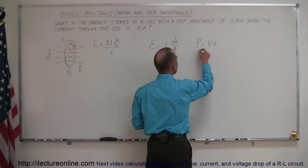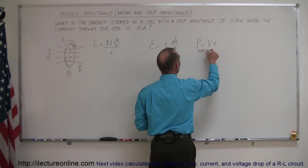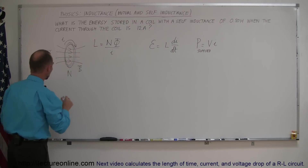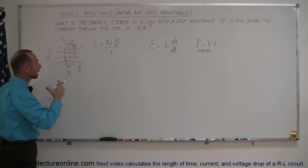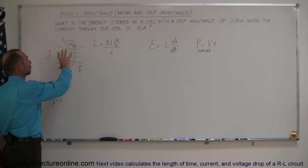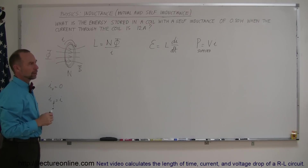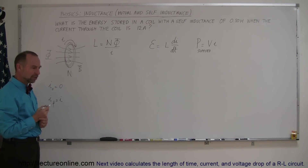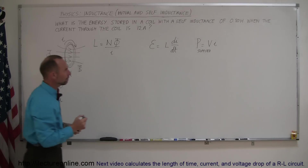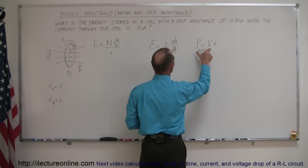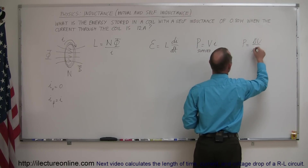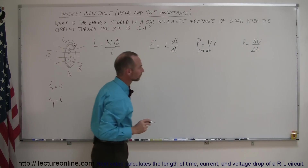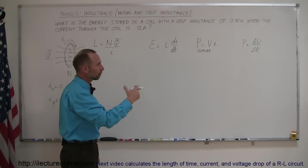We also know that the power supplied to a coil, or to any device, is always equal to the voltage times the current I. That's the power supplied to any device, including to a coil. If the current starts out at zero and builds up to a final value I, then while the current is building up through the coil, we're storing energy into it because we're actually supplying power to the coil. Power by definition is the change in energy over time — we'll use the letter U for energy — so power is the energy supplied per unit time.